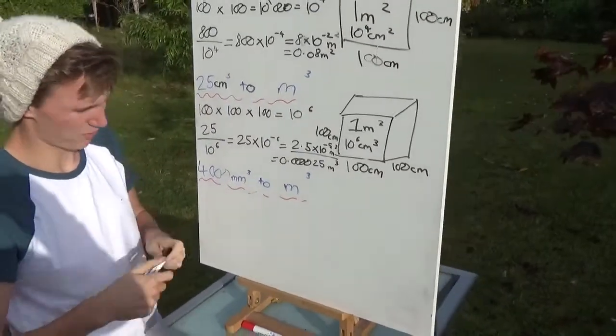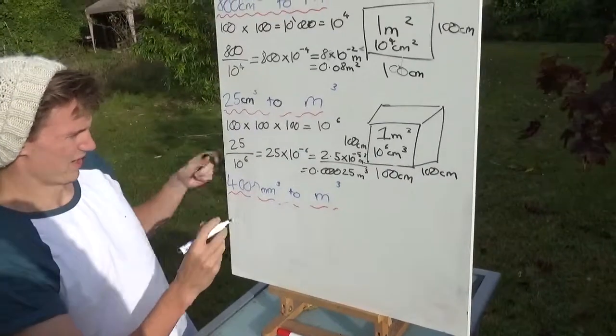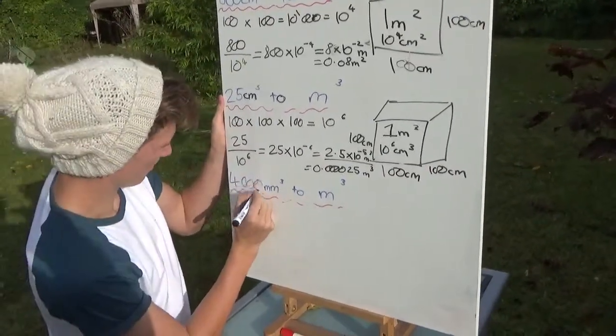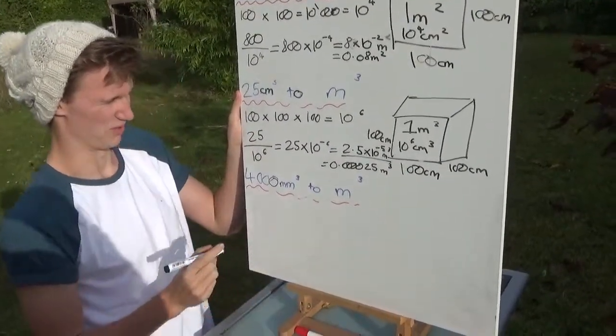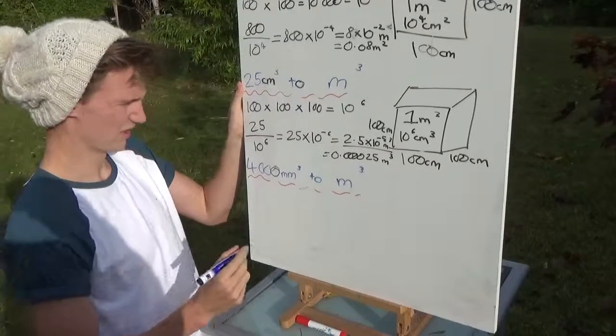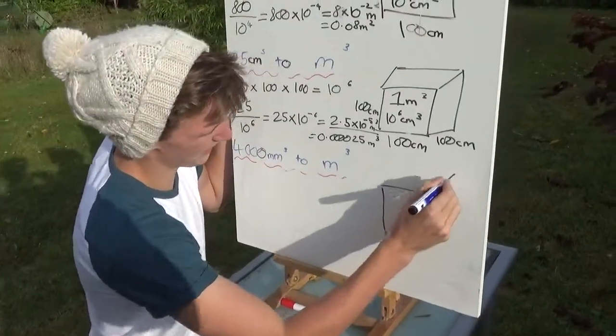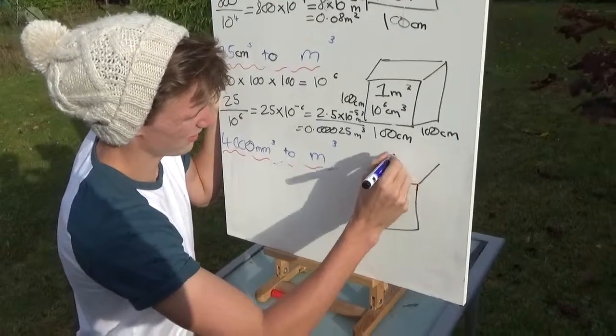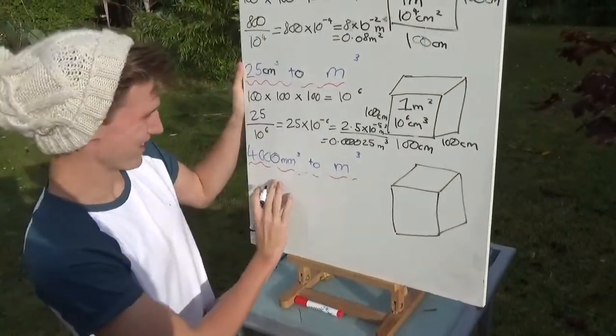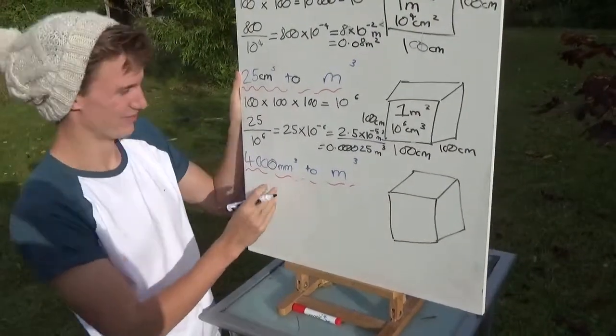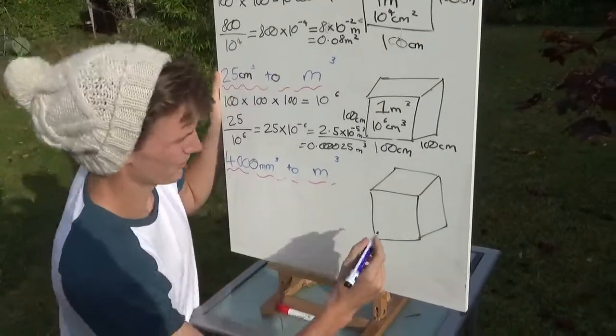Now we come on to the last question, which is also being partially rubbed out. We have 4,000 millimeters cubed to meters cubed. We're going to do another badly drawn cube. Impressionist art. Well, Picasso wasn't great when he was your age, or maybe he was.